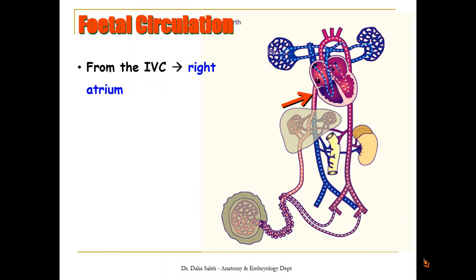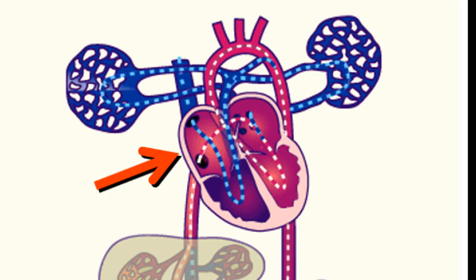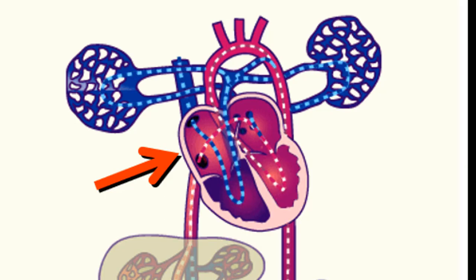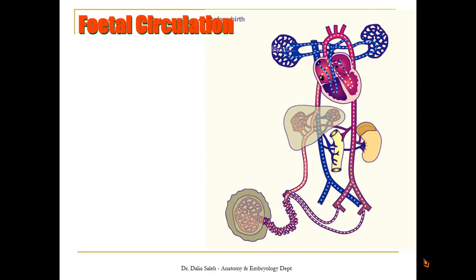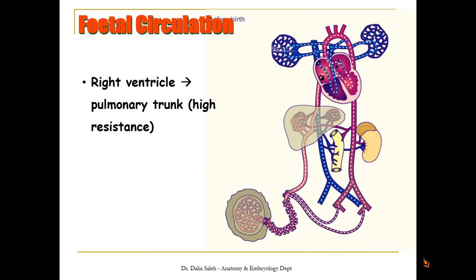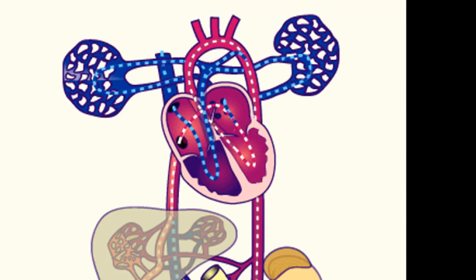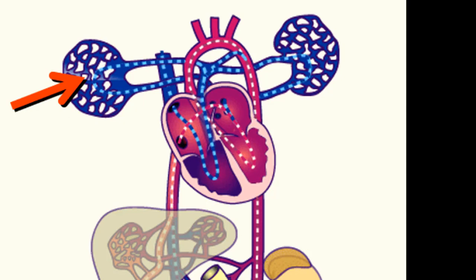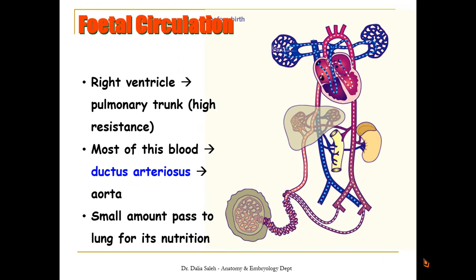In the animation, oxygenated blood is shown in red, non-oxygenated in blue, and mixed blood in purple. Oxygenated blood comes from the placenta through the umbilical vein; most passes directly to the inferior vena cava via the ductus venosus, while a small amount circulates through the liver sinusoids. Blood then passes from the inferior vena cava to the right atrium, where a valve directs it through the foramen ovale to the left atrium. A small amount mixes with blood from the superior vena cava and goes to the right ventricle. Most blood in the pulmonary trunk escapes through the ductus arteriosus into the aorta, while a small amount goes to the lungs for nutrition, returning via pulmonary veins to the left atrium and ventricle, then to the aorta.